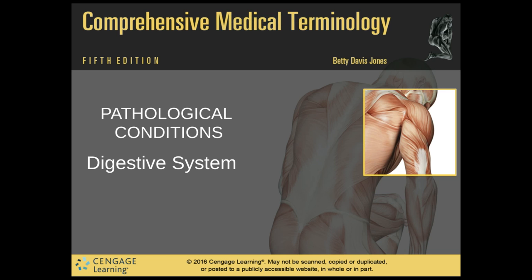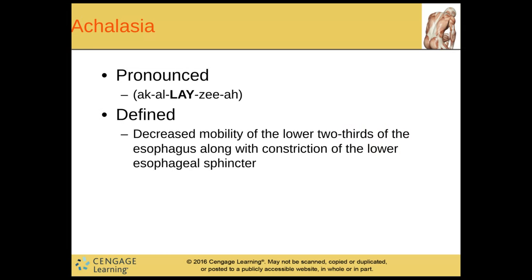So now this is part two. Still in comprehensive medical terminology, this is the pathological conditions that go along with the digestive system. We have achalasia, which is defined as a decreased mobility of the lower two-thirds of the esophagus along with constriction of the lower esophageal sphincter.